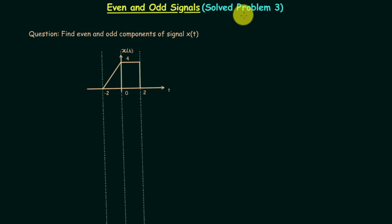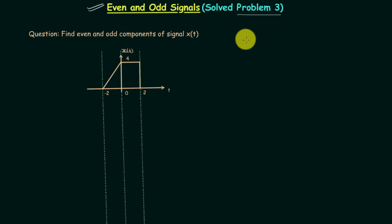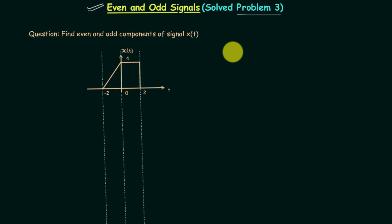In this lecture we will solve problem number 3 based on even and odd signals. In the previous problem we obtained even and odd components directly by analyzing different terms involved in the signal. We can do this because we know the properties of even and odd signals, but sometimes we cannot use properties directly. In those cases we are bound to use the formula, which we have already derived.